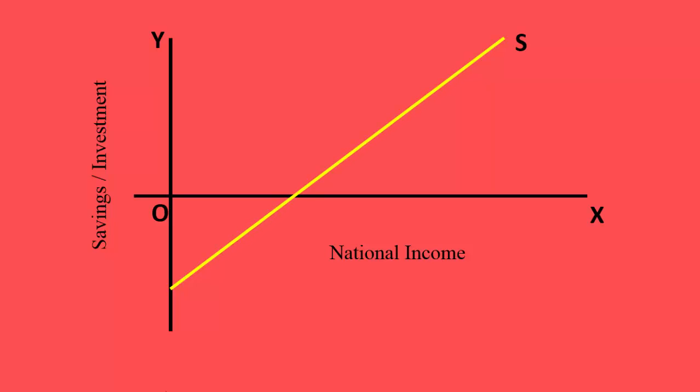S is the savings curve. It is governed by the savings function. It slopes upwards. It is a positive function of income. With increase in income, people plan to save more.